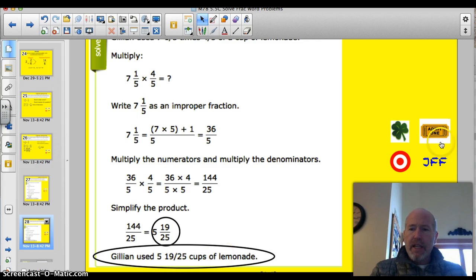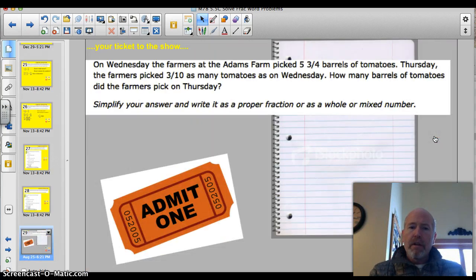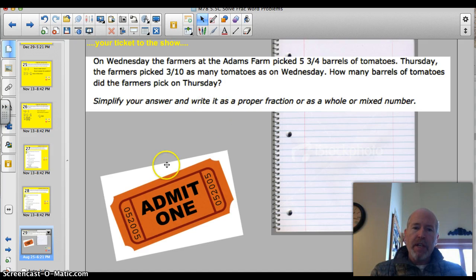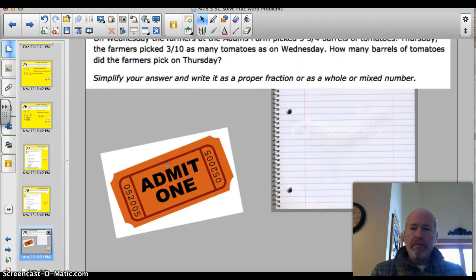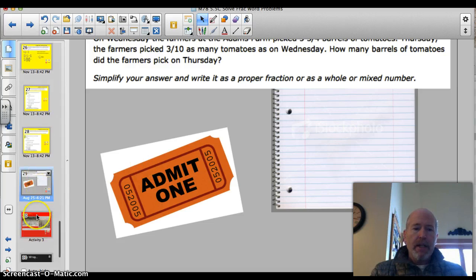Alright, you ready for the ticket? I think you are. Here we go. On Wednesday, the farmers at the Adams Farm picked 5 and 3 quarter barrels of tomatoes. Thursday, the farmers picked 3 tenths as many tomatoes as on Wednesday. How many barrels did the farmers pick on Thursday? I'll pause for a second so you can freeze it. Go ahead. Write that just one problem for the ticket. Solve that bad boy. Bring it to class.